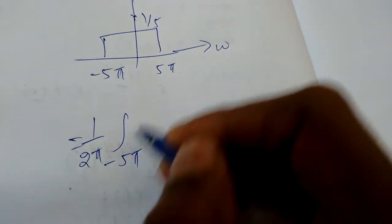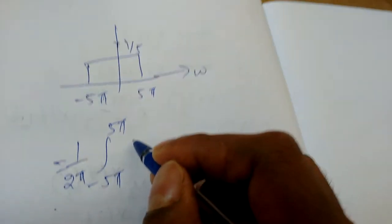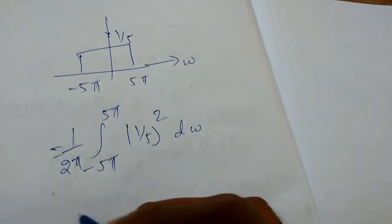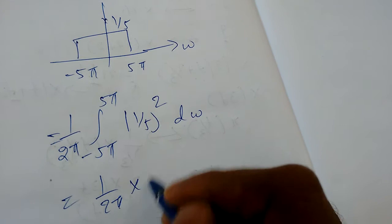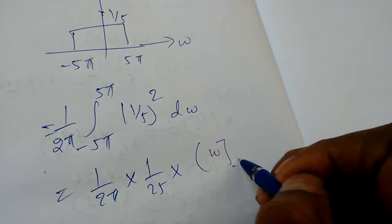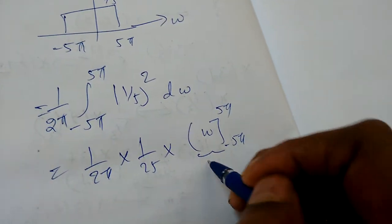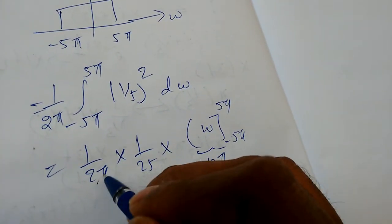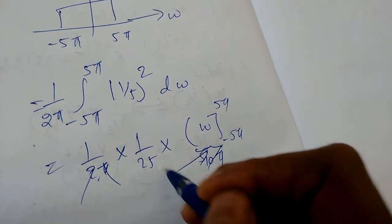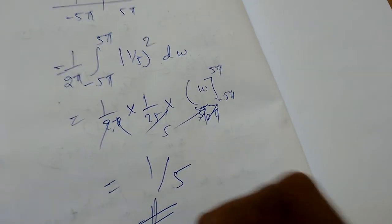Using Parseval's theorem: energy = (1/2π) · ∫ from −5π to 5π of |X(jω)|² dω = (1/2π) · (1/25) · 10π = 10π/(50π) = 1/5. So 1/5 is the final answer.